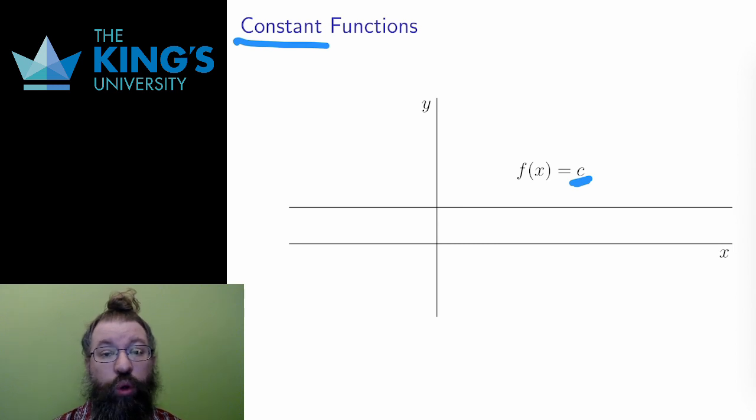Since the y coordinate represents the output, a constant function has a constant y coordinate. Its graph is a horizontal line. No matter what x I start with, I get the same y value, the same output.